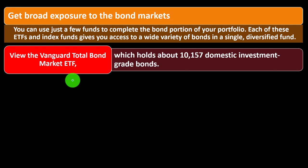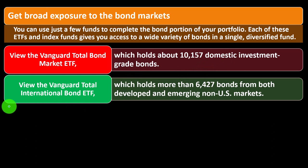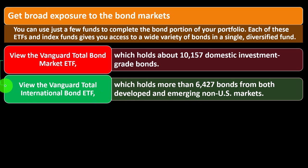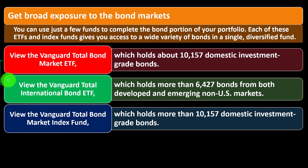You can view the Vanguard Total Bond Market ETF — if you're looking for just one place to put your bond funds with some diversification, this holds about 10,157 domestic investment-grade bonds. There's also the Vanguard Total International Bond Fund, which holds more than 6,427 bonds from both developed and emerging markets, giving you international exposure. Together, these two funds give you domestic and international bond diversification. There's also the Vanguard Total Bond Market Index Fund, which holds more than 10,557 domestic investment-grade bonds — note that it's an index fund.